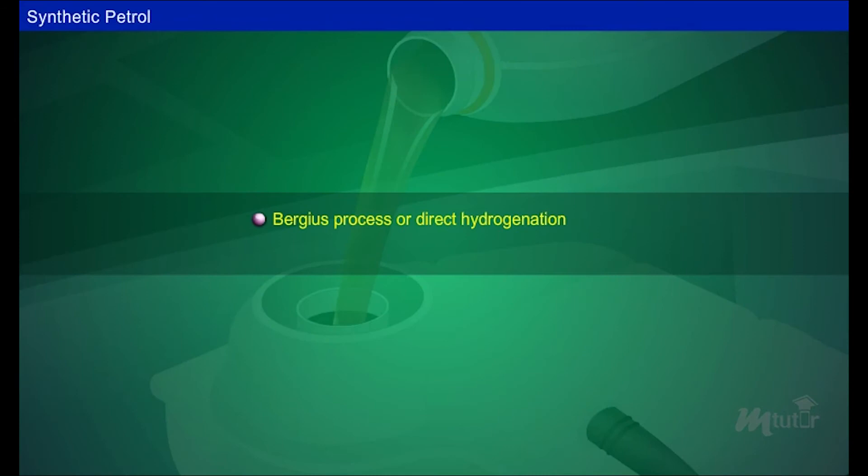They are Bergius process or direct hydrogenation and Fischer-Tropsch process or indirect hydrogenation.